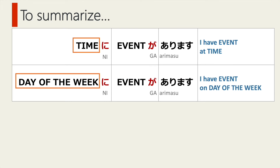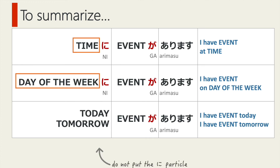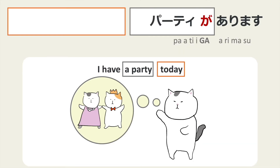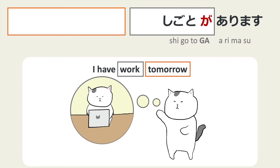For Japanese 101, please remember that we can put the に particle after an exact time or a day of the week to express what time or on which day the event occurs. However, please be careful — we never put the に particle after words like today or tomorrow. For example: 'I have a party today' is 今日 パーティーが あります。 'I have work tomorrow' is 明日 仕事が あります。